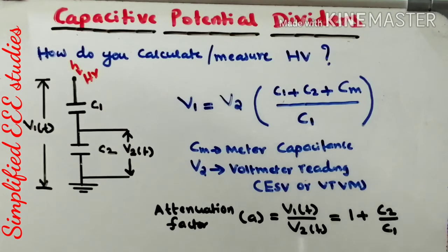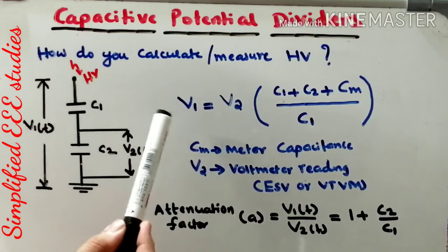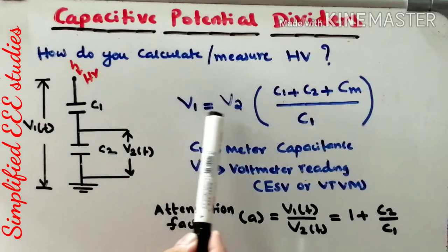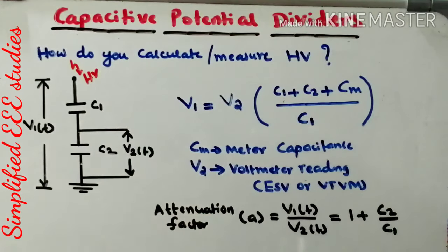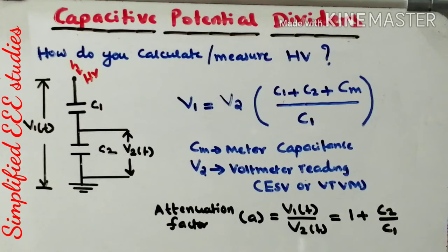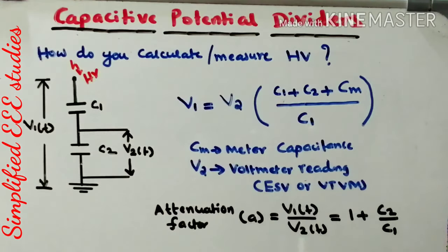Now let us explain how to calculate the voltage which you operate externally — this high voltage that has to be measured. Let me call the high voltage applied V1. V1 = V2 × (C1 + C2 + Cm) / C1. V2 is the reading obtained from the Electrostatic Voltmeter or VTVM. C1 and C2 values are known from the design. The meter capacitance Cm is approximately 50 pF. By substituting all values, you can determine the high voltage applied externally. This is a simple method to measure high voltage externally.